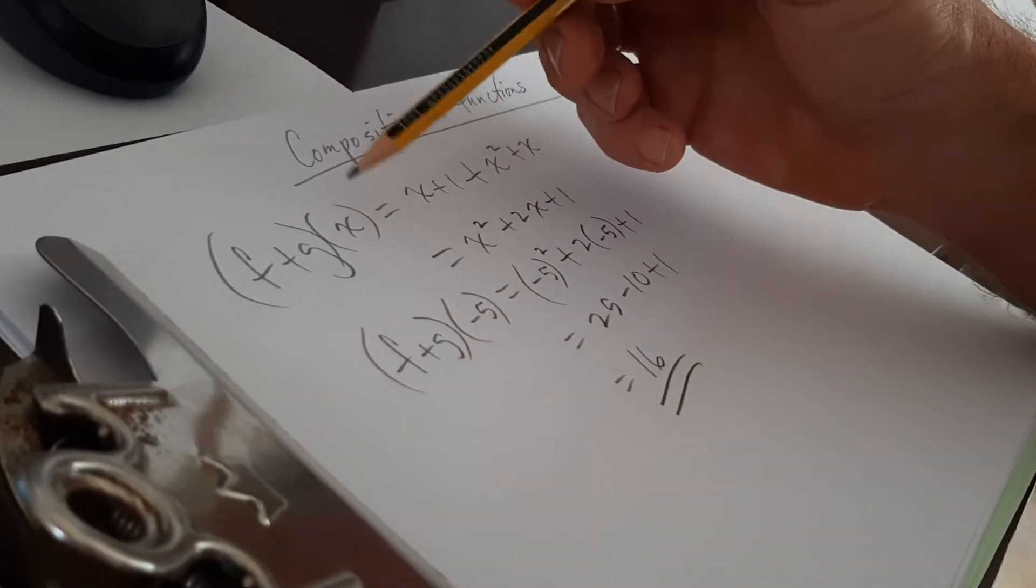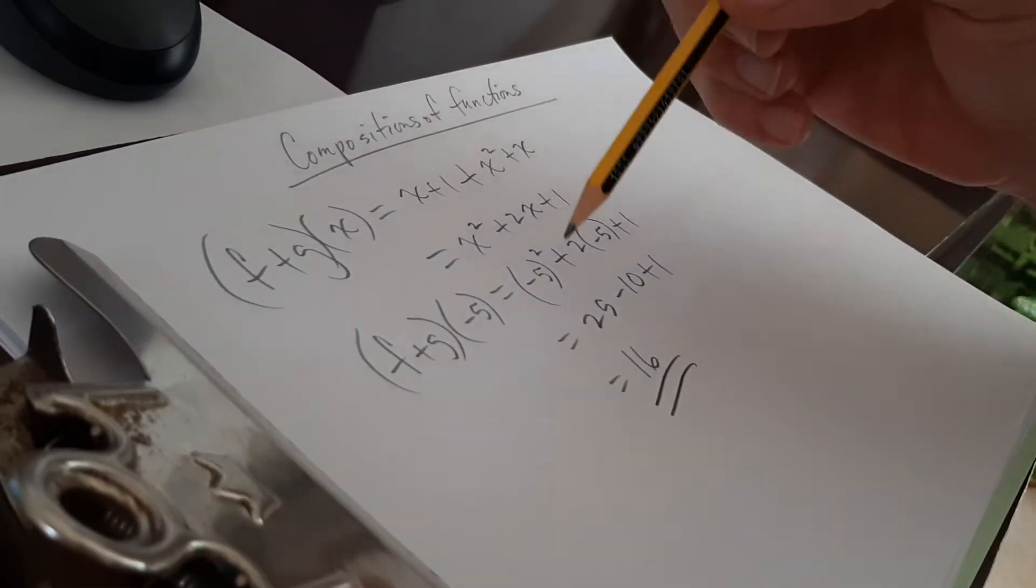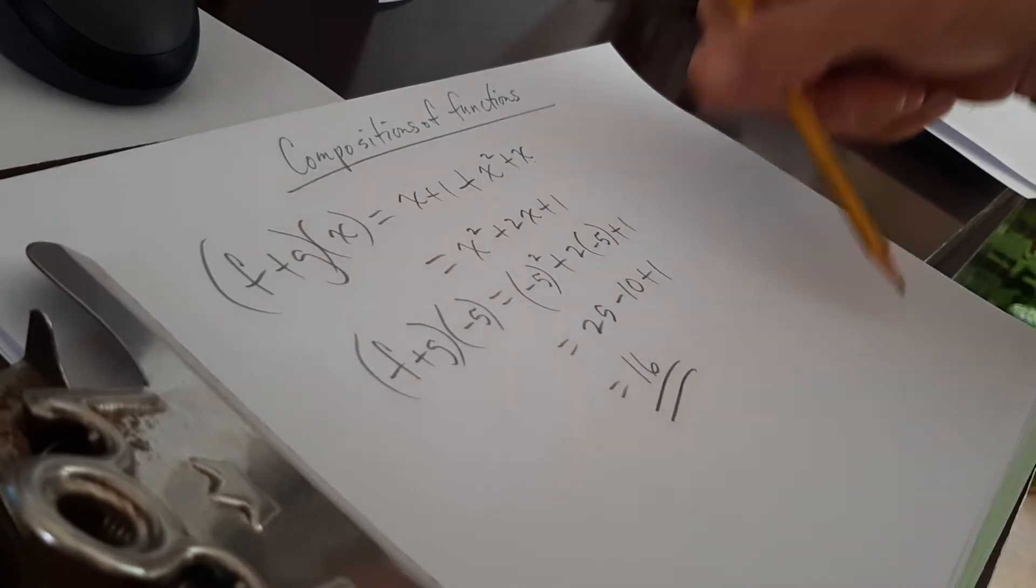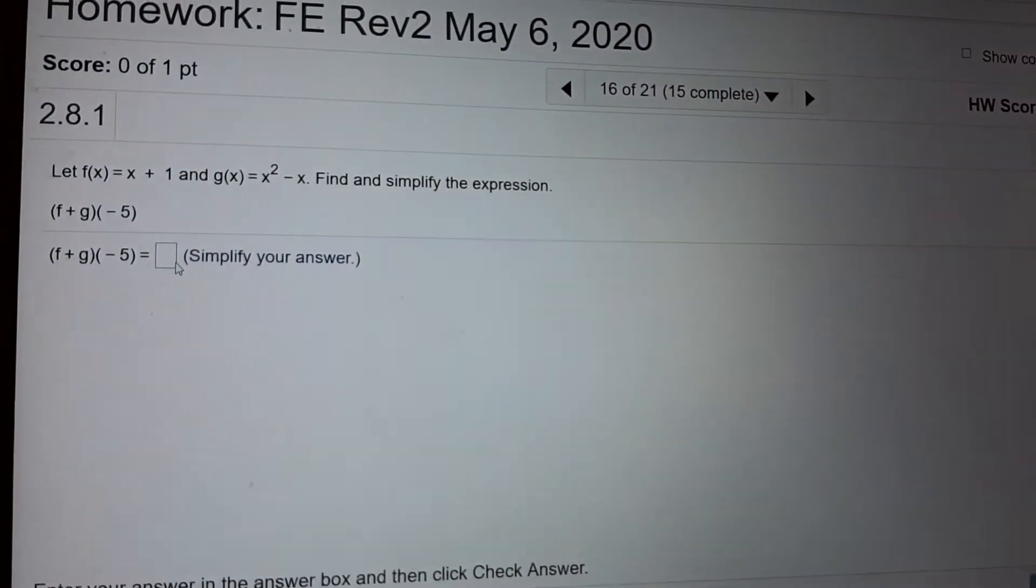Okay, so those are the steps. Just add the two functions together, substitute in the value they got there and get your answer. All right. So we got 16.